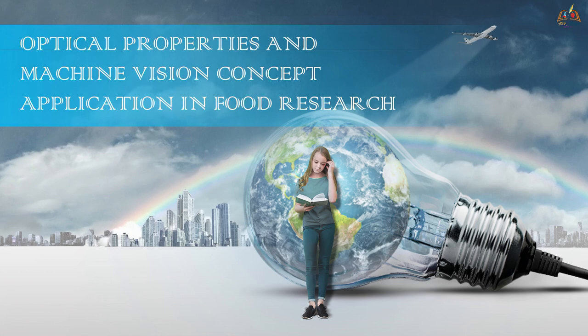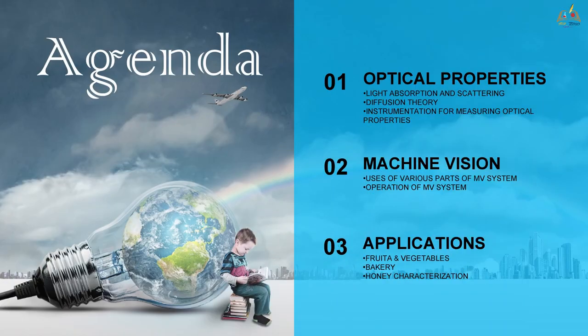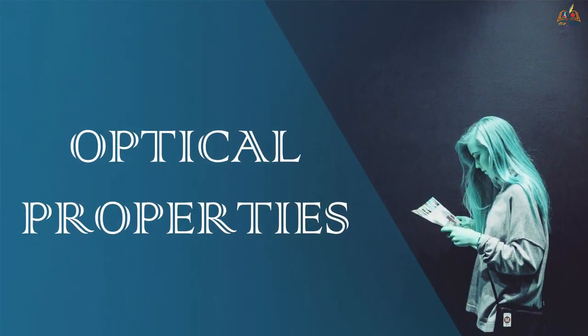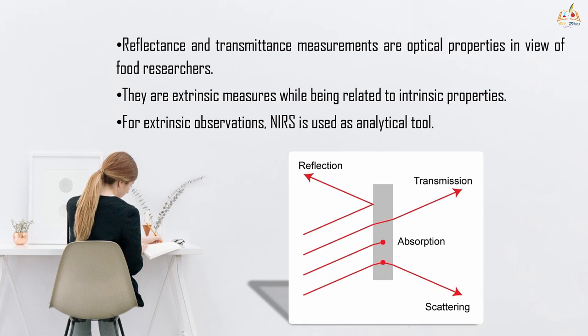Let's have a quick view on our agenda. First, we are going to see optical properties like light absorption and scattering, diffusion theory, and instruments required for measuring those optical properties. Second topic is machine vision — the uses of each part and how it operates. Finally, we are going to see the applications in fruits and vegetables and bakery.